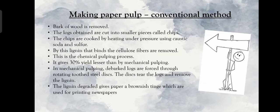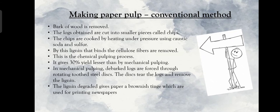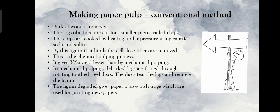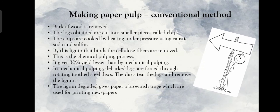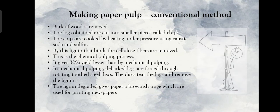In the conventional method of making paper pulp, the bark of wood is removed, and the logs obtained are cut into smaller pieces called chips. The chips are cooked by heating under pressure using caustic soda and sulfur. By this process, the lignin that binds the cellulose fibers is removed. This is the chemical pulping process, and it gives about 30% yield — lesser than that obtained by mechanical pulping.